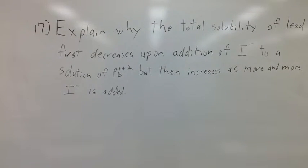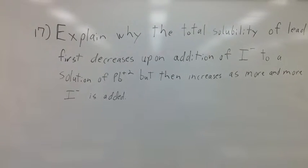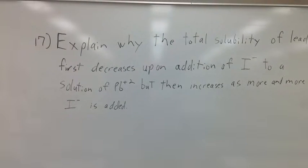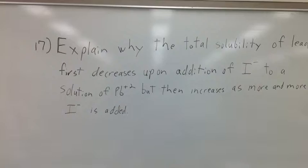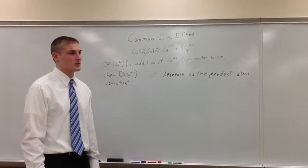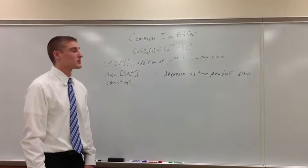Number 17, explain why the total solubility of lead first decreases upon addition of I- to a solution of PB2+, but then increases as more and more I- is added. Before we get to the actual answer to the question, we have to talk about some basic concepts first.